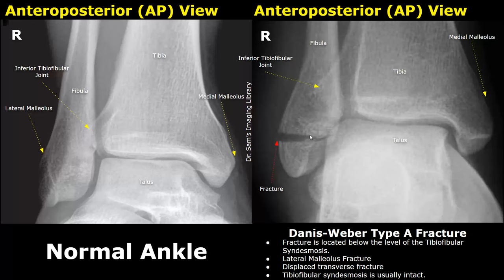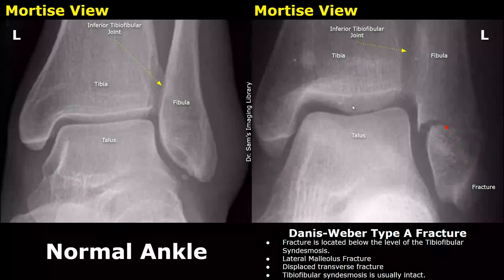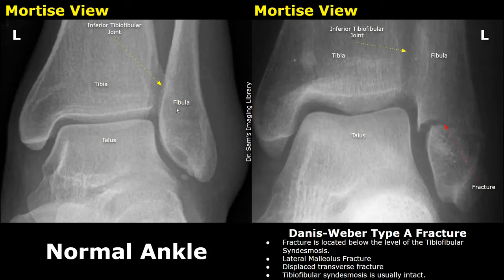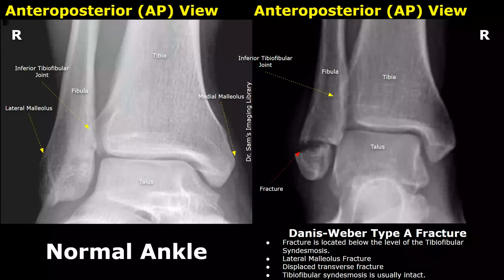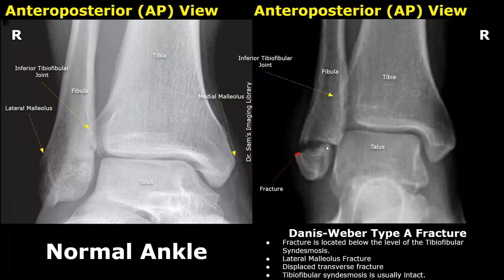This image shows a Danis-Weber type A fracture. There is a transverse fracture in the fibula at the lateral malleolus. The fracture is located below the level of the tibio-fibular syndesmosis, and the syndesmosis is not damaged. This is a mortise view of the left ankle, more focused at the ankle joint space. The fracture of the fibula is below the level of the tibio-fibular joint space, confirming a Weber type A fracture. Here is another case — a displaced transverse fracture below the level of the tibio-fibular joint with the syndesmosis intact.